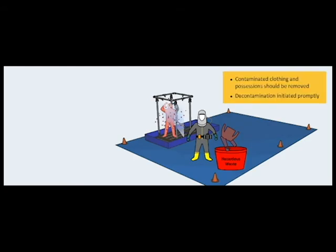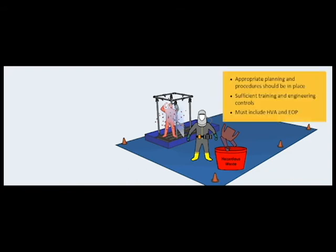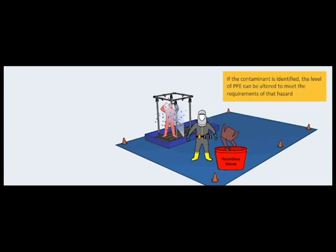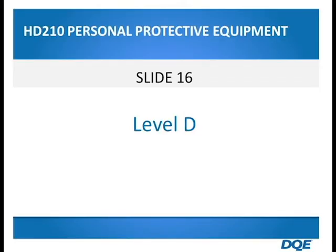The victim's contaminated clothing and possessions should be removed and contained quickly upon arrival, and decontamination initiated promptly. In addition, appropriate planning and procedures should be in place, supported with sufficient training and engineering controls. This planning must include a hazard vulnerability analysis and emergency operations plan that is updated yearly. If the contaminant is identified and its hazards properties evaluated, the level of PPE can be altered to meet the requirements of that particular hazard in a hospital setting.